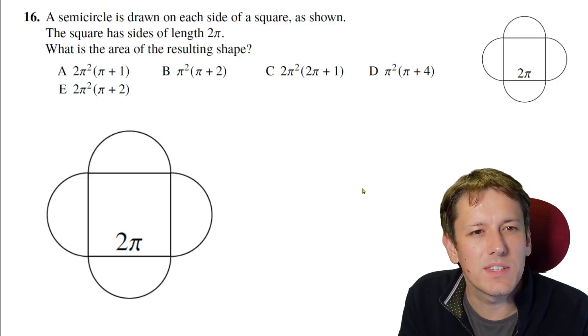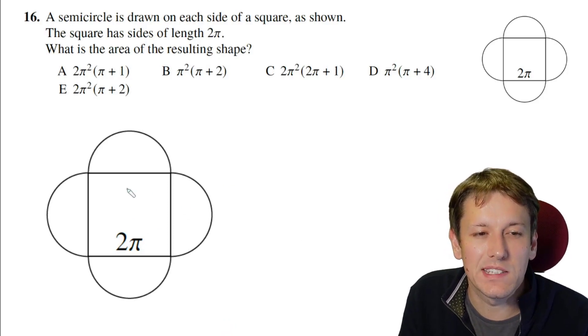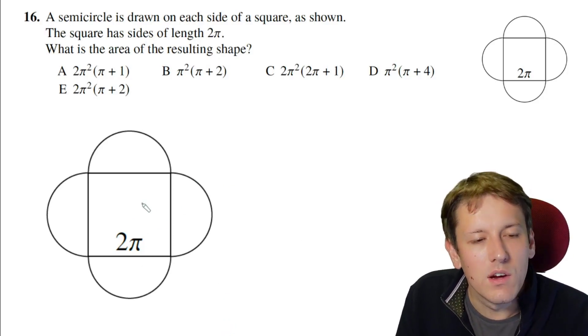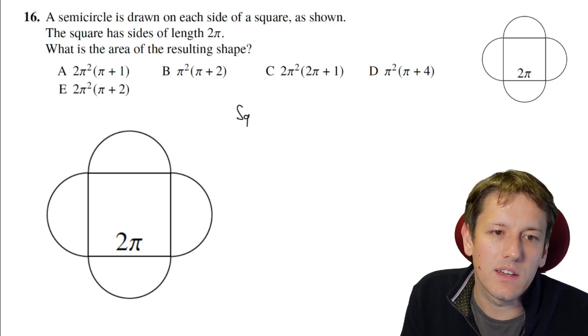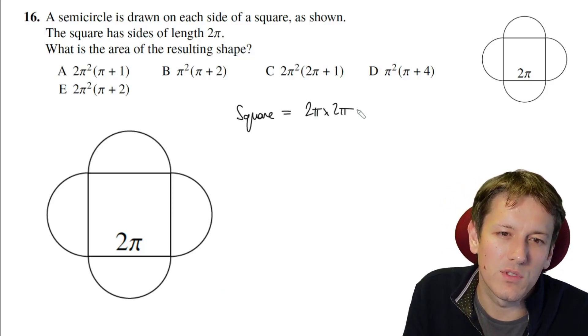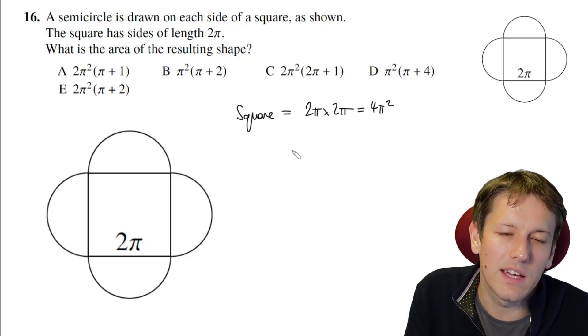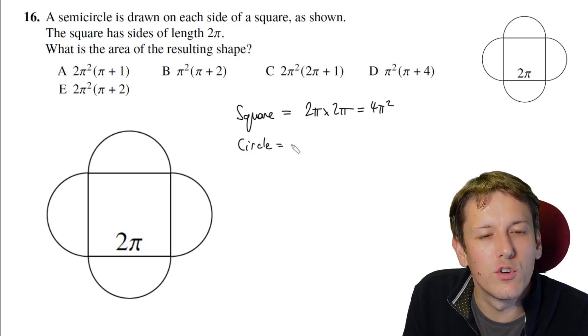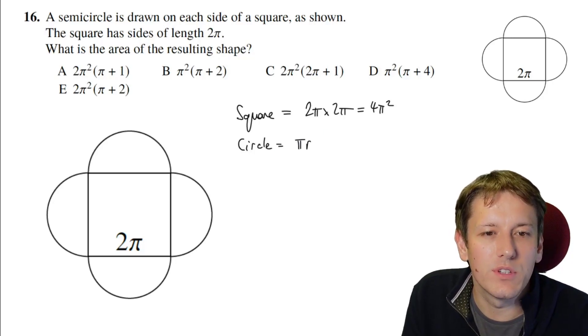Question 16, we've got a semicircle drawn on each side of a square as shown. The square has side length 2π and we want to know what the area of the resulting shape is. I've just made a slightly bigger copy of the diagram to look at. So the area of the square is pretty straightforward, I just do 2π times 2π and that's 4π².